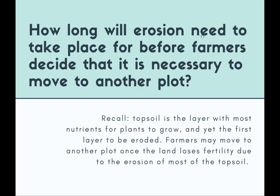First question: how long will erosion need to take place before farmers decide that it is necessary to move to another plot? Just a quick recap. Recall that the topsoil, which is the top layer of the soil, is the layer with the most nutrients for plants to grow, and it's also the first layer to be eroded simply because it's at the top. So when water or wind blows, it will erode the top layer first. That is why erosion, especially of the topsoil, is a very key problem — when the topsoil is eroded, the nutrients will also be eroded away.